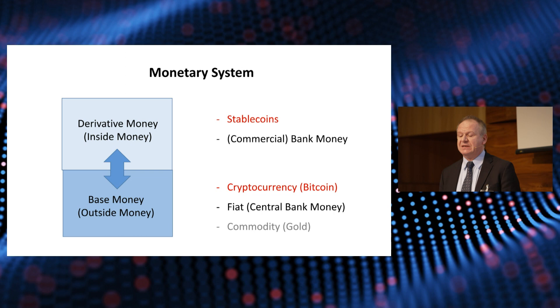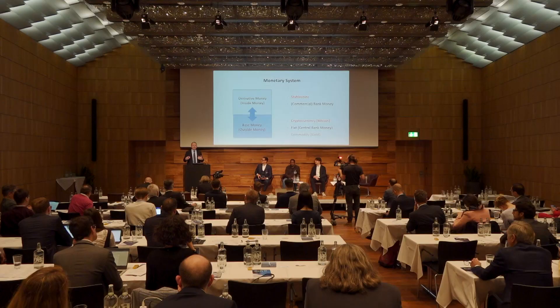We moved to a fiat system where central banks provide the base money and keep it scarce through monetary policy. Now we have the new kids on the block: cryptocurrencies like Bitcoin, where scarcity is guaranteed by the code, and stable coins, which I call derivative money because they are based on the base money. Interestingly, stable coins are not based on Bitcoin due to large price volatility — they are based on fiat money. Even non-custodial stable coins peg their value to the US dollar. So if they don't need CBDC, they apparently still need the Fed to provide that anchor.